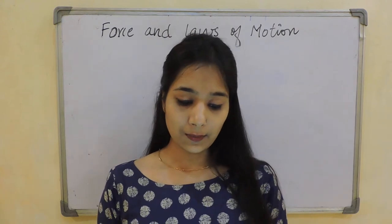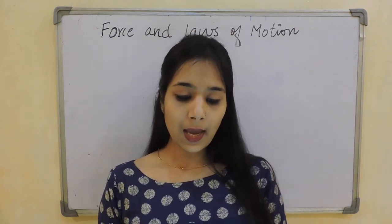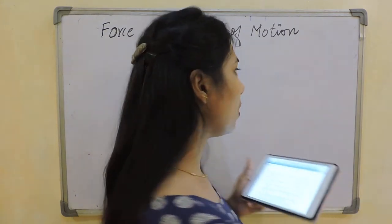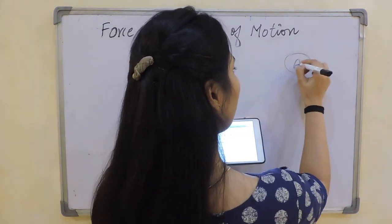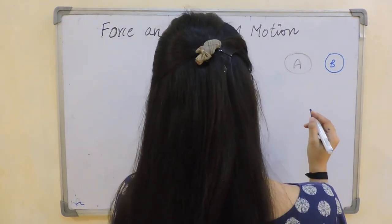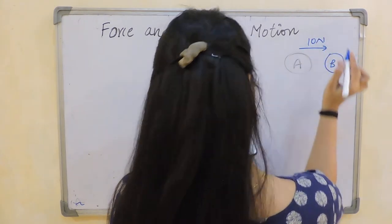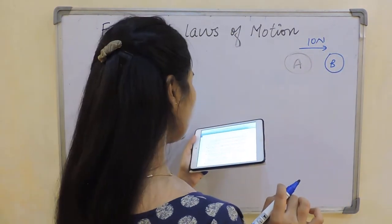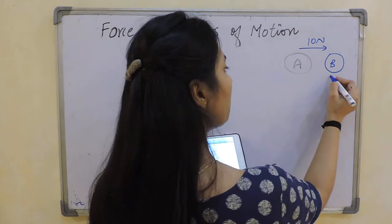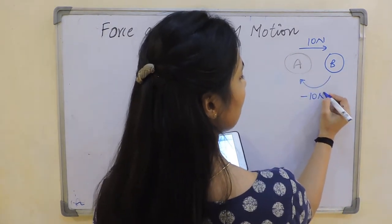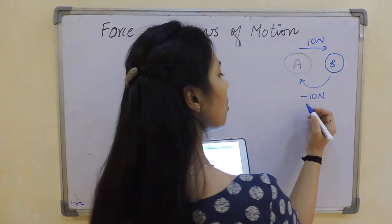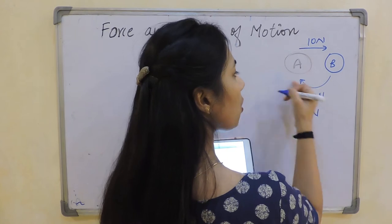Next question: when two bodies A and B interact, A exerts a force of 10 Newton on B towards east. What is the force exerted by B on A? Since the forces are equal and opposite, it will be minus 10 Newton, or equivalently 10 Newton towards west.